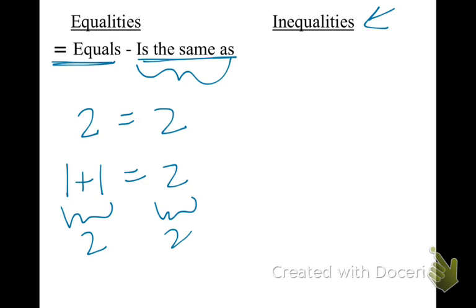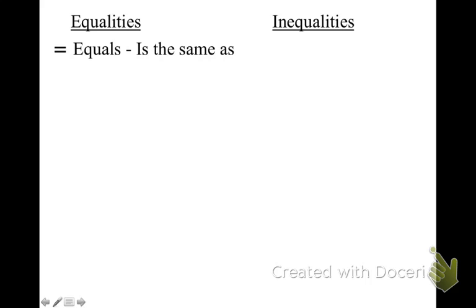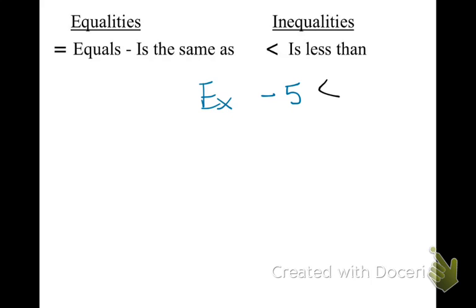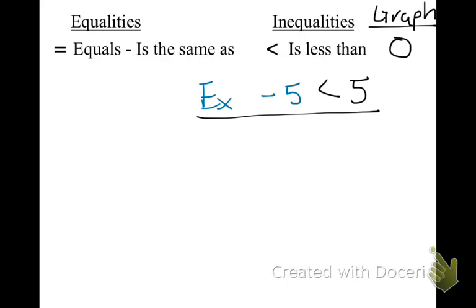Now we're going to be dealing with something called an inequality. This symbol means less than. For example — and I want this in your notes — negative 5 is less than 5. That little symbol means less than. And when we're graphing, it is going to be an open circle. So put a little section for graph, and I want you to have an open circle as well as this example in your notes.